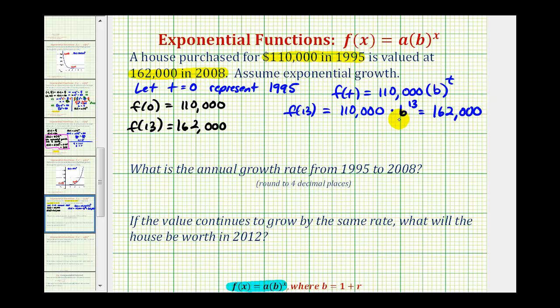And now we'll solve this for b to determine our base. So we'll divide both sides by $110,000. So we have b to the 13th is equal to this fraction here. And to solve this for b, we're going to raise both sides to the reciprocal power of 13, which would be 1/13th. Remember when raising powers to powers, we multiply the exponents. 13 times 1/13th is equal to b to the first, or just b.